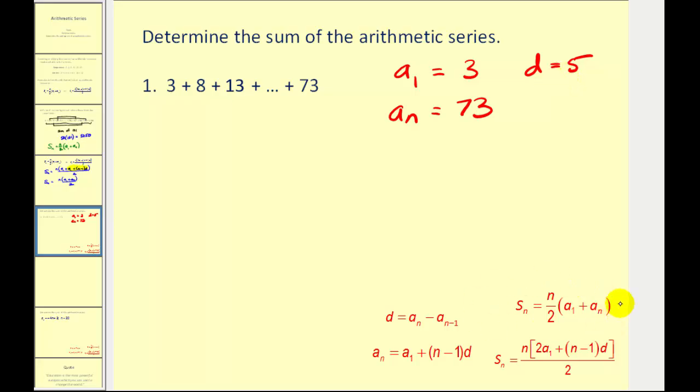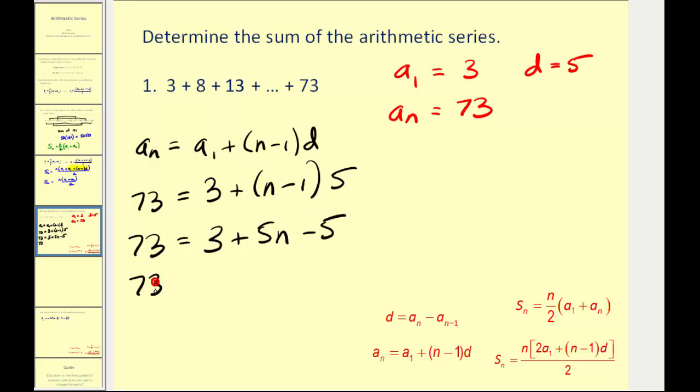Now if we take a look at the formula to find the partial sum, we do have to find the value of n still. But we can use this formula here to find the value of n. If we let a sub n equal 73, we should be able to solve for n. Let's give it a try. A sub one is equal to three. We're trying to find n. And the common difference is equal to five. Well here we have one unknown so we should be able to solve for n. Distribute the five. Combine like terms. This will be three minus five. That will be five n minus two. Add two to both sides. It will be 75. Divide by five. Looks like n equals fifteen.